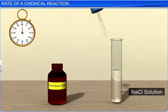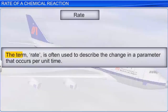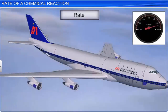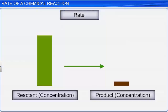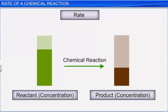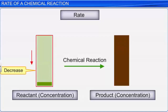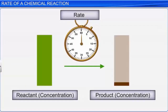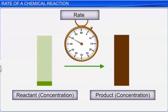Let us start with a simple definition of the rate of a chemical reaction. The term rate is often used to describe the change in a parameter that occurs per unit time. For example, the rate at which an aeroplane travels is the distance travelled per unit of time, such as kilometres per hour. In chemical kinetics, the rate of a chemical reaction is defined as the rate of decrease in the concentration of the reactant, or the rate of increase in the concentration of the product. The reaction rate specifies how fast a reaction takes place.